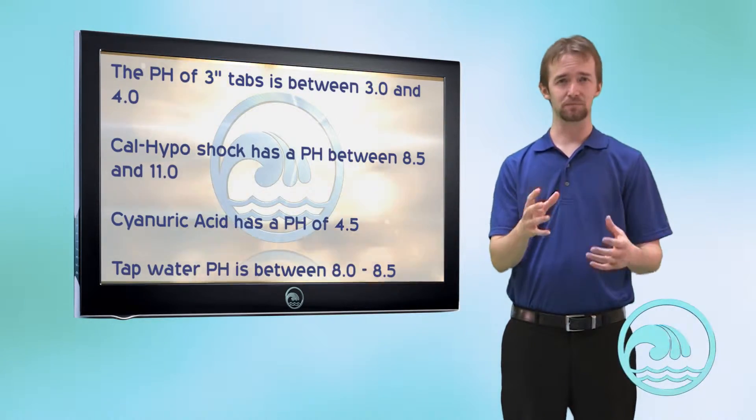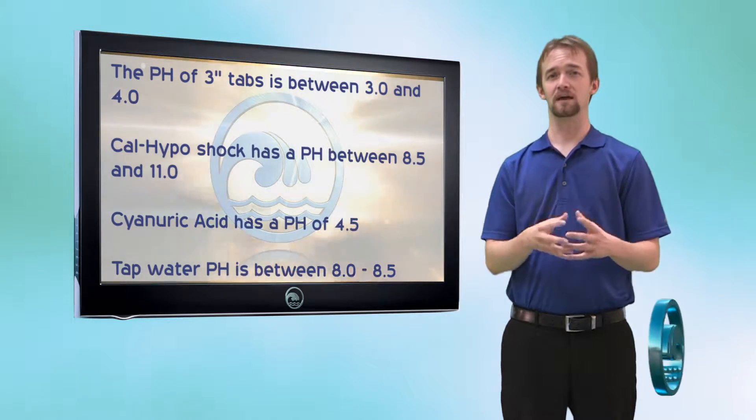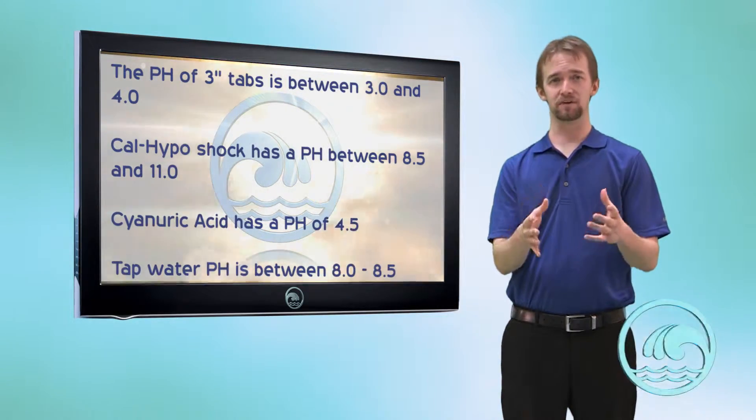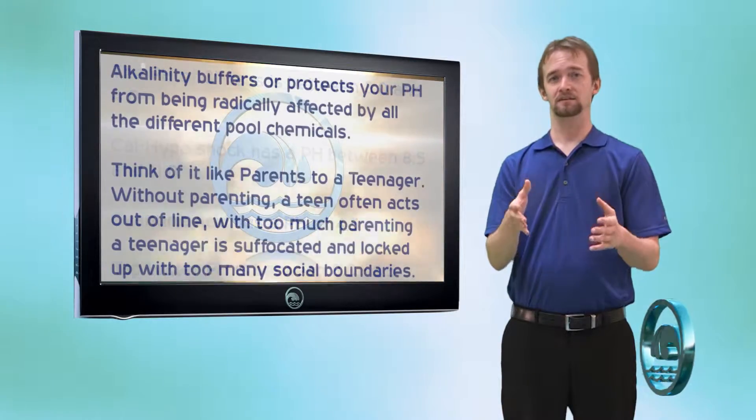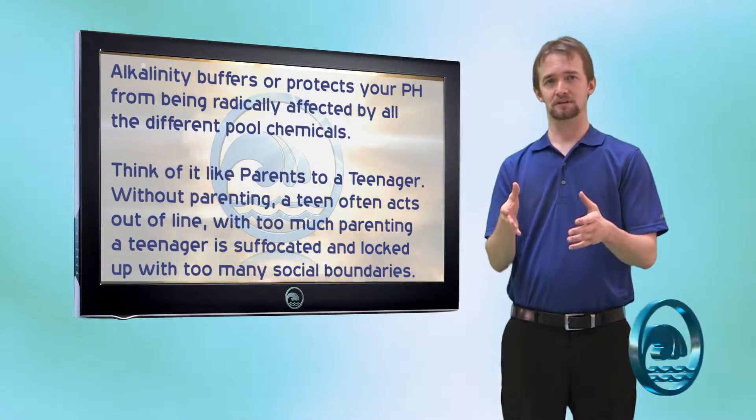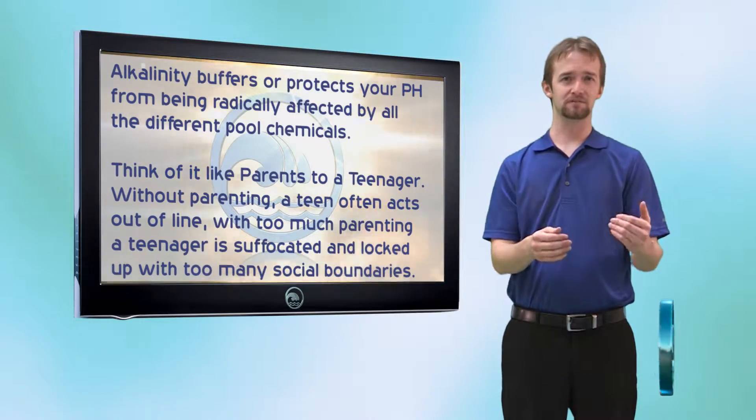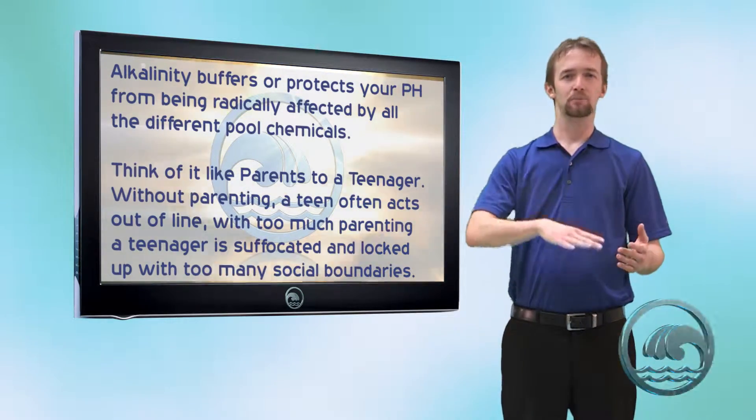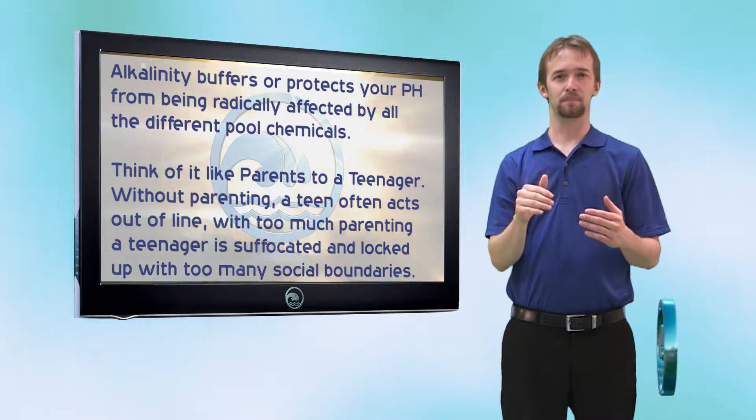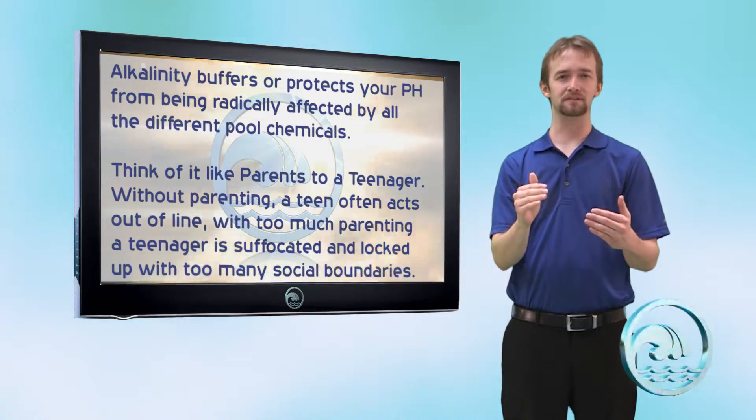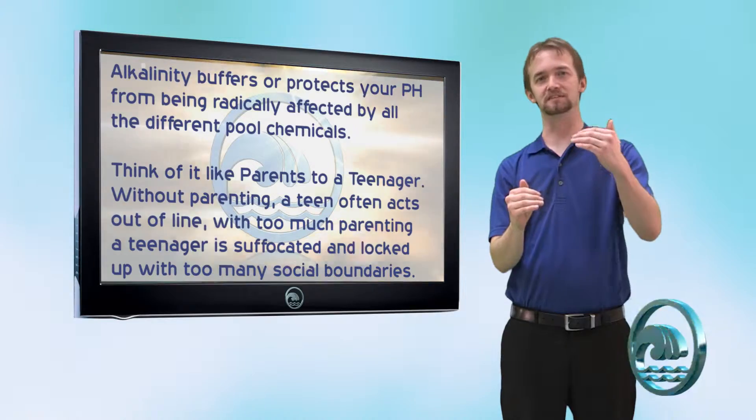So all these different chemicals with different pHs are constantly being added to your water and would normally have a very chaotic effect on your pool's pH. This is where alkalinity comes in. Alkalinity keeps your pH in check. So instead of it going from 7.2 to 9, down to 3, back to 6, up to 10, it's going to stay in a healthy range of 7.2 up to 7.6 and then to 8.